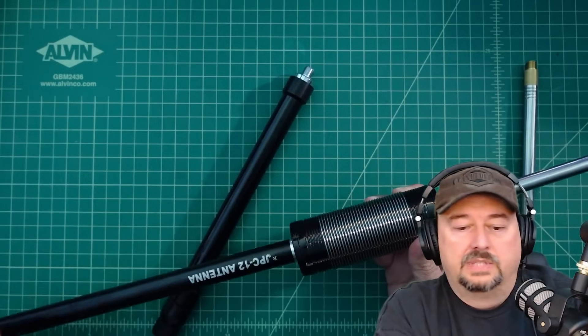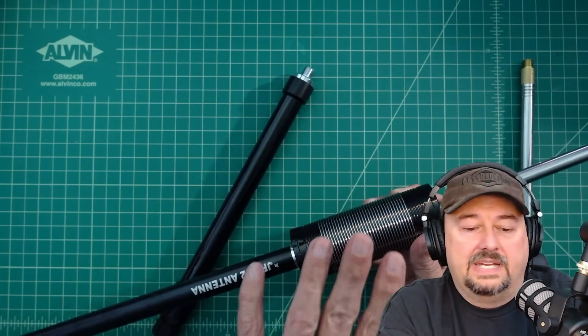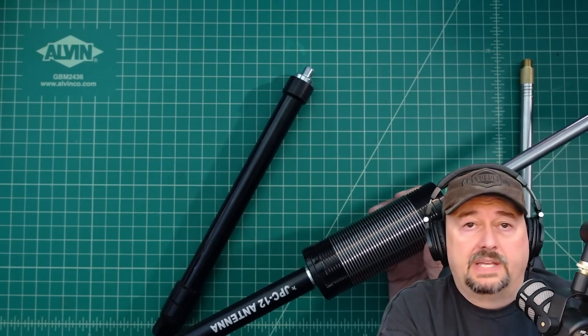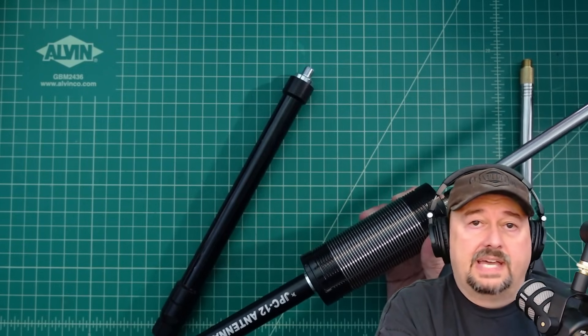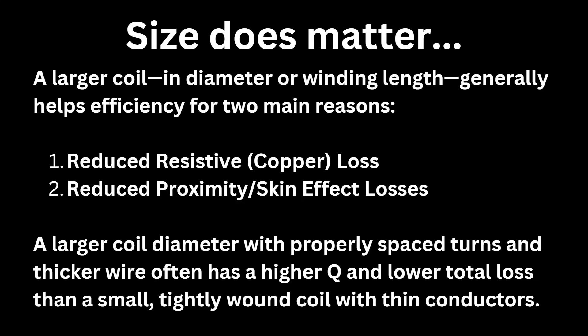Ideally, a monopole antenna, a vertical antenna, doesn't have a coil. And it is a quarter wavelength long with an appropriate ground plane. That appropriate ground plane acts as that ground side of the dipole antenna that we talked about. So when we talk about the coil, unfortunately, size does matter.